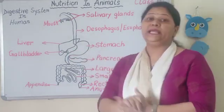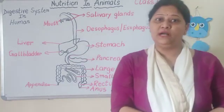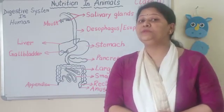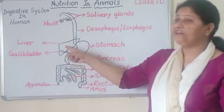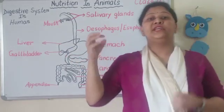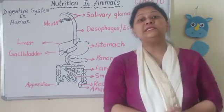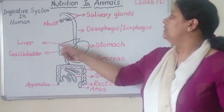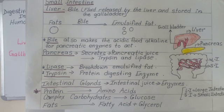Now stomach mein jo food particle digest hue hain, woh ab small intestine mein aayenge — toh inka nature acidic hoga because of hydrochloric acid. Small intestine mein liver aur pancreas dono ka secretion jayega. Liver secrete karta hai bile, jo store ho jata hai gall bladder mein. Bile ka basic kaam kya hai? Emulsification of fat — fat ko emulsified fat mein convert karna.